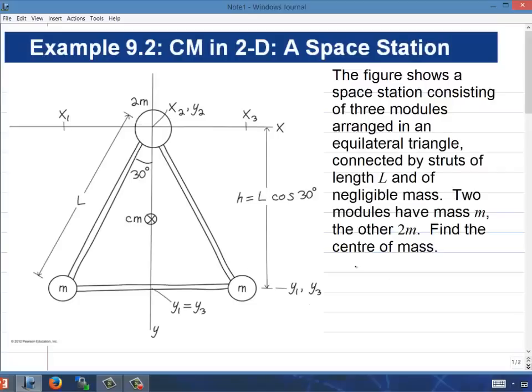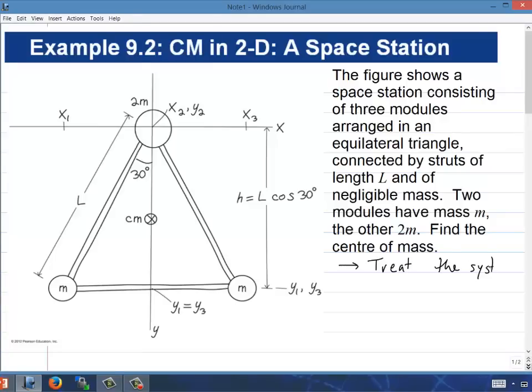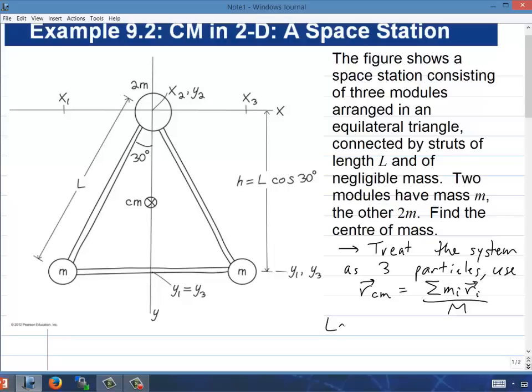In Example 9.2, the figure shows a space station consisting of three modules arranged in an equilateral triangle connected by struts of length L of negligible mass. Two modules have mass m, and the other one 2m. Find the center of mass. So our strategy will be to neglect the struts and treat the system as three particles and use this position of the center of mass equation from our book.